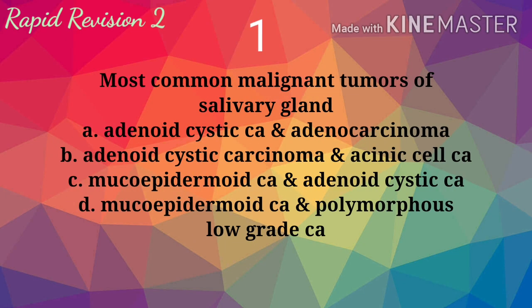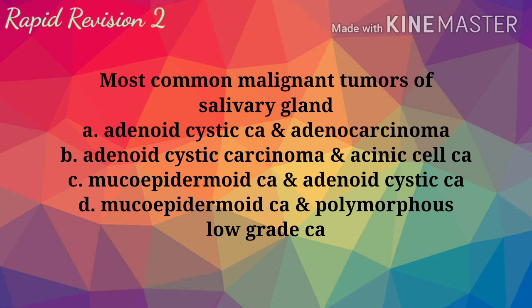First one: most common malignant tumors of salivary gland. A. Adenoid cystic carcinoma and adenocarcinoma. B. Adenoid cystic carcinoma and acinic cell carcinoma. C. Mucoepidermoid carcinoma and adenoid cystic carcinoma. D. Mucoepidermoid carcinoma and polymorphous low-grade carcinoma. Answer is C: mucoepidermoid carcinoma and adenoid cystic carcinoma.